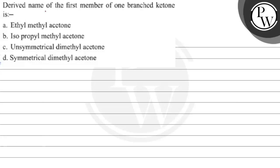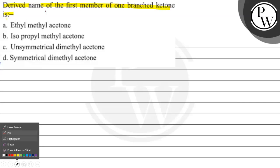Let's read this question. The question says: the derived name of the first member of one branched ketone is — option A: ethyl methyl acetone; option B: isopropyl methyl acetone; option C: unsymmetrical dimethyl acetone; option D: symmetrical dimethyl acetone.